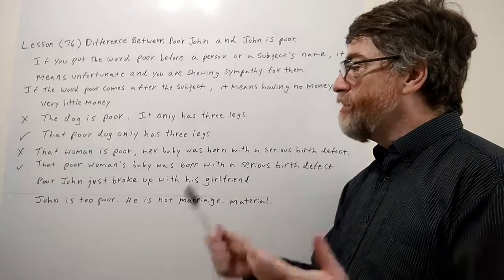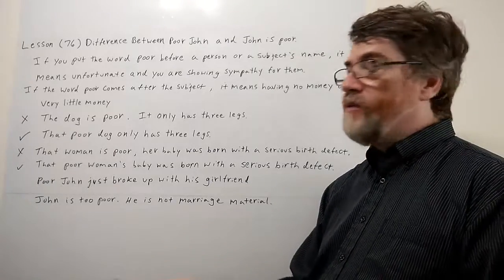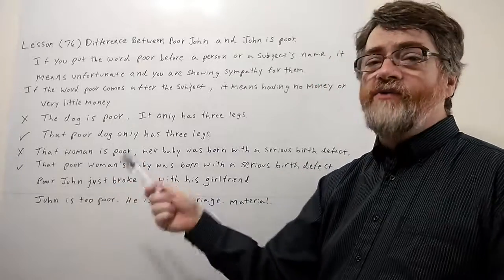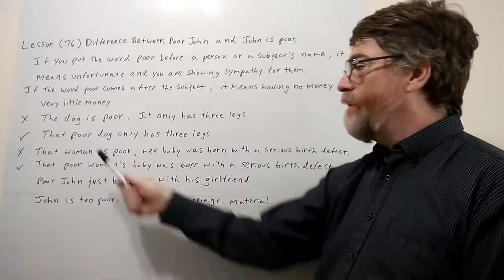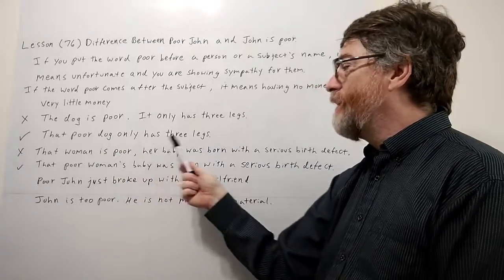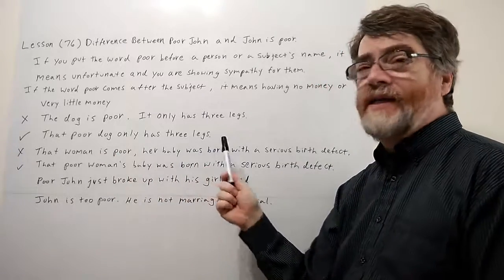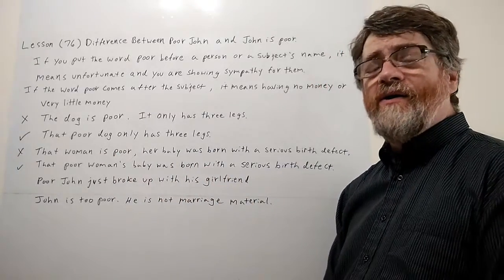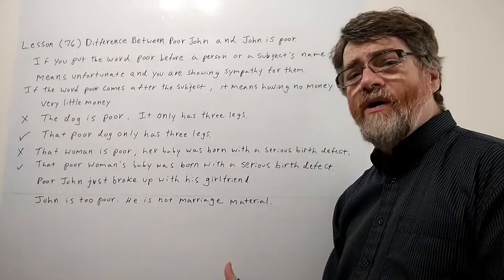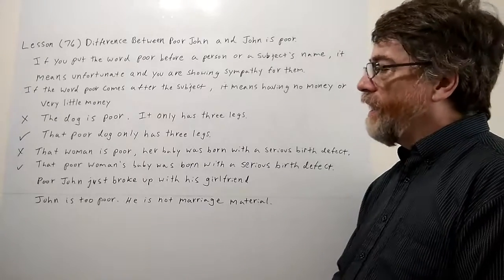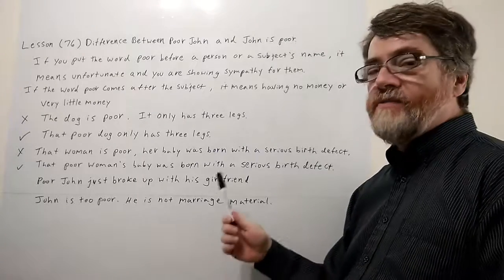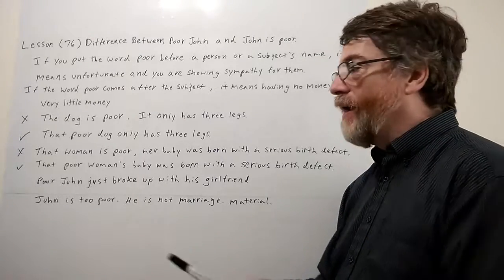The correct way to say that would be: 'That poor dog only has three legs.' You know, 'that unfortunate dog' — 'that poor dog.' A lot of times you would say it that way.